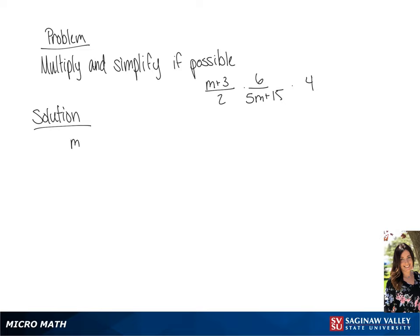We have the problem (m + 3) over 2, times 6 over (5m + 15), times 4, which we are going to write as 4 over 1. Before we solve this, we're going to simplify the fractions.